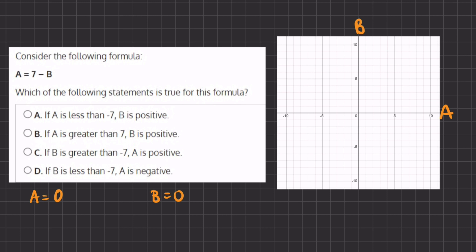So when A equals 0, let's plug in A equals 0 right over here, we have 0 equals 7 minus B. Now if we add B to both sides we get B to equal 7. So when A equals 0, B will equal 7.